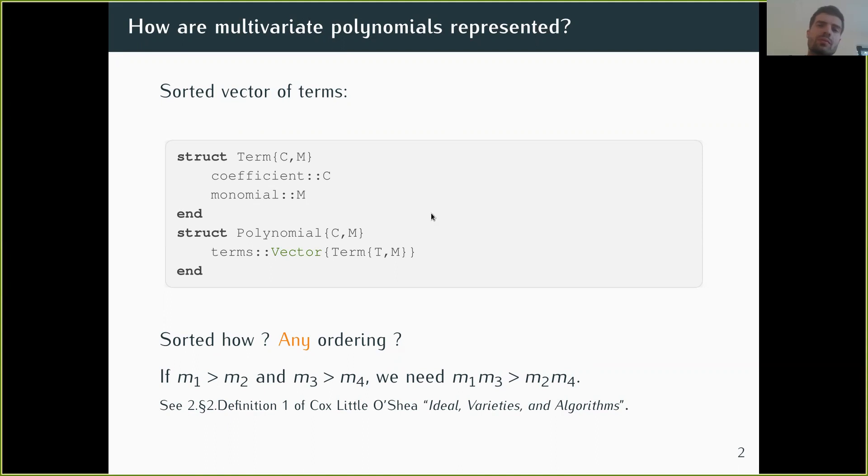For example, if you have this ordering between two monomials and this ordering between two monomials, you should have this ordering between the products. If the ordering does not respect that, then it becomes harder to implement multiplication of polynomials. So multivariate polynomial implementations need to assume this kind of thing.